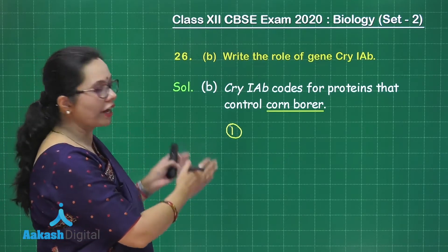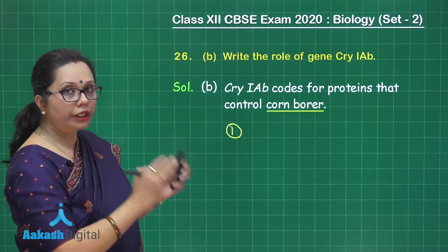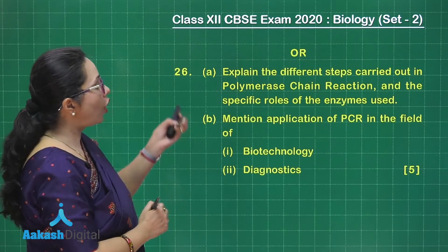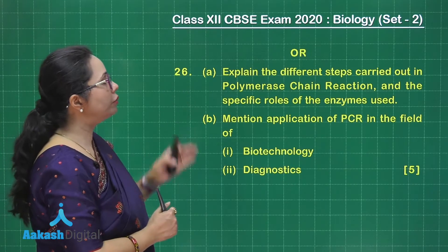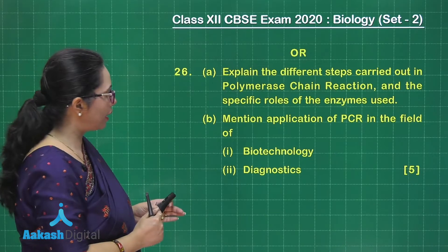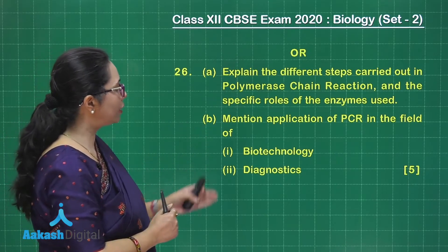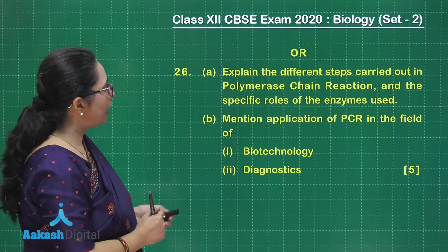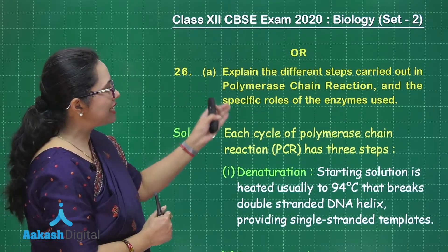Now taking up the alternate of question 26. Part A asks: explain the different steps carried out in polymerase chain reaction and the specific roles of the enzyme used. Part B asks: mention the applications of PCR in the fields of biotechnology and diagnostics. PCR runs in cycles and each cycle has three steps.